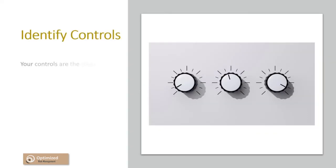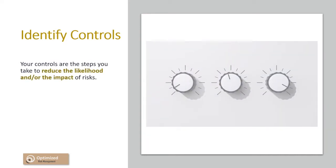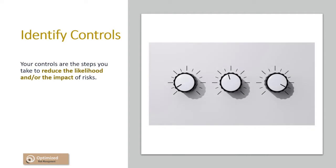Your controls are the protective steps you take to reduce the likelihood and/or impact of this risk. This could be preventative, which serves to reduce the likelihood of the risk occurring — some common preventative controls are training and four-eye checks, for example. Controls can also be detective or corrective, which serve to reduce the impact of the risk should it occur — such as taking out insurance or reconciling transactions to an end-of-day report. Make a list of all the controls you have in place for this risk, the frequency of when it is performed, and who is responsible for performing the control.